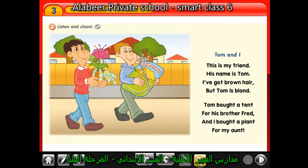The chant. Look at this picture — what can you see? There are two boys. One of them has brown hair and the second boy has blonde hair. This one bought a plant and this one bought a tent. Let's listen to the chant carefully.